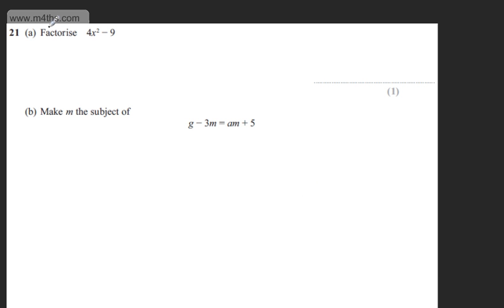This is question 21. In part A for one mark, we're asked to factorize 4x squared minus 9. This is the difference of two squares. So for our one mark, we can simply write that it will be 2x plus 3 multiplied by 2x minus 3.